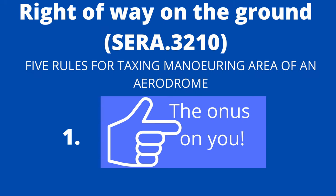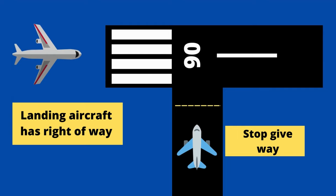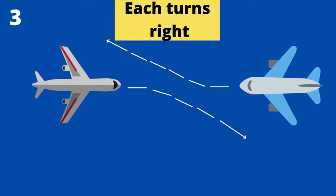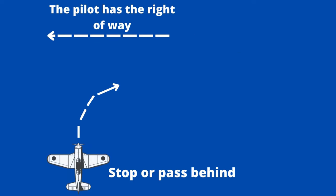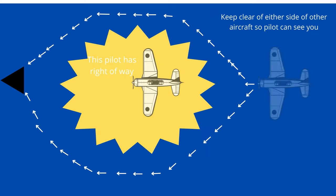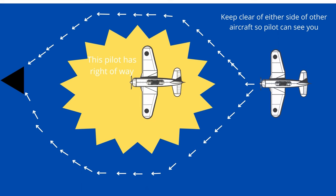Right-of-way on the ground — SERA 3210(5), Rules for Taxiing on the Manoeuvring Area of an Aerodrome. Number 1: regardless of any ATC clearance, it is the duty of an aircraft commander to do all possible to avoid collision on the ground with other aircraft, vehicles, or obstacles. Where an aircraft is being towed and the commander is not on board, that duty lies with the person in charge of the towing vehicle. Number 2: aircraft on the ground must give way to those taking off or landing and to any vehicle towing an aircraft. Number 3: when two aircraft are approaching head-on or nearly so, each must turn right. Number 4: when two aircraft are converging, the one which has the other on its right must give way, avoiding crossing ahead of the other unless passing well clear. Number 5: an aircraft which is being overtaken by another has right-of-way, and the overtaking aircraft must keep out of the way until passed and well clear.